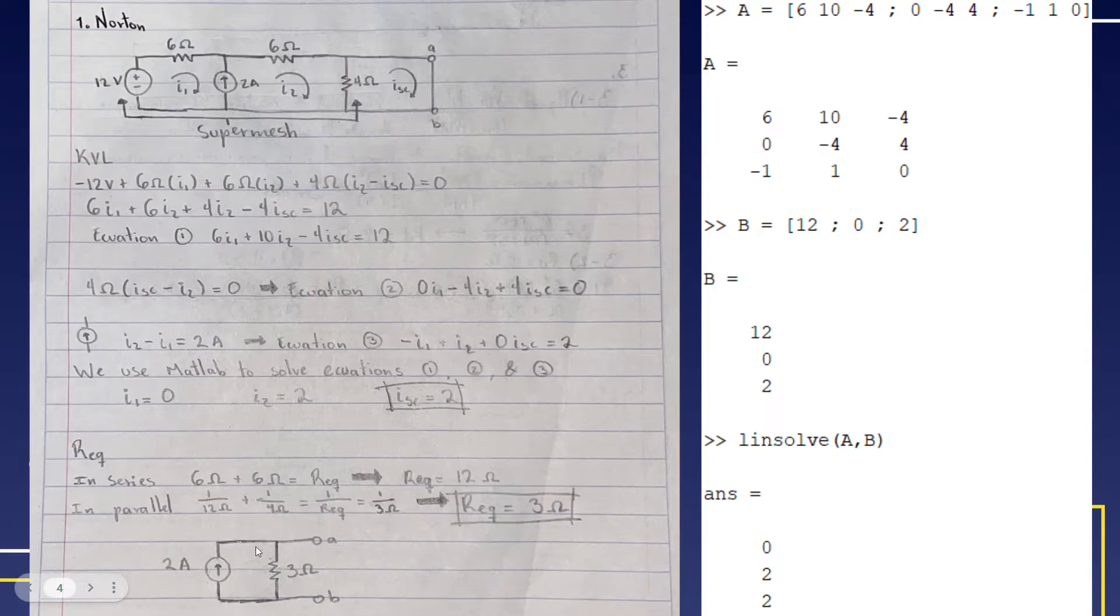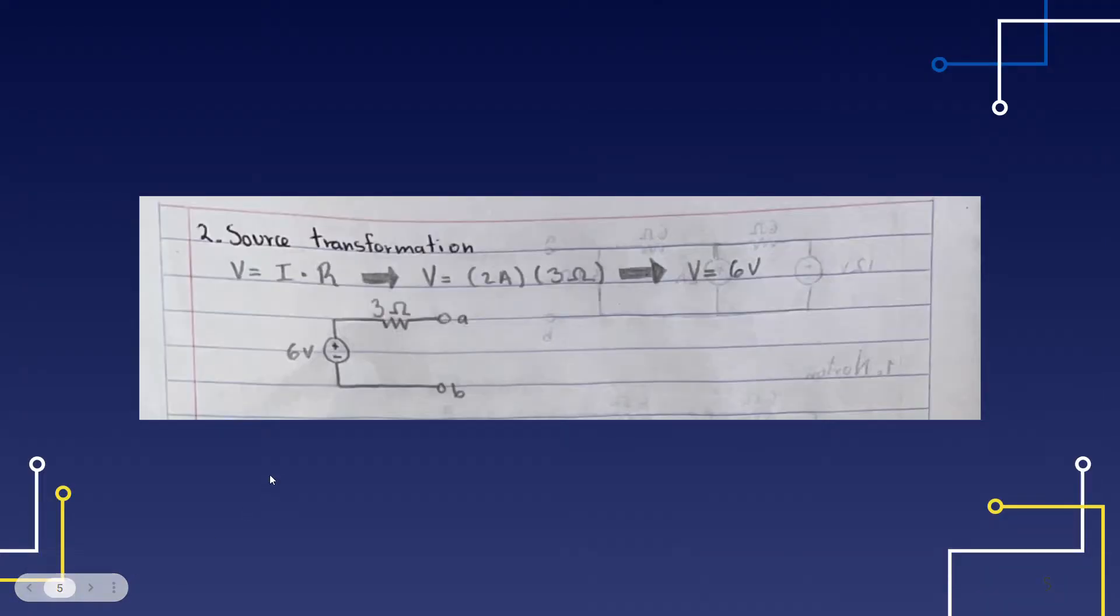This will be our Norton equivalent circuit: a 2 ampere current source in parallel with a 3 ohm resistor.